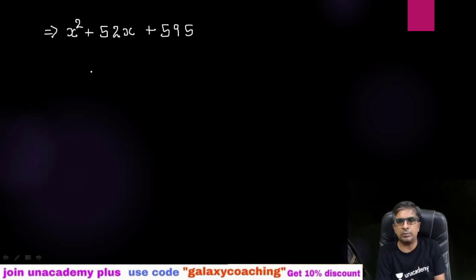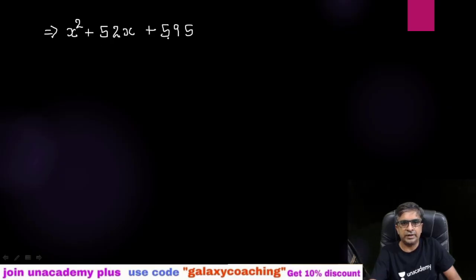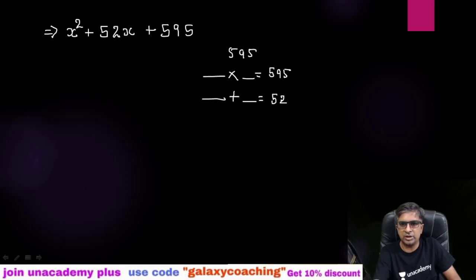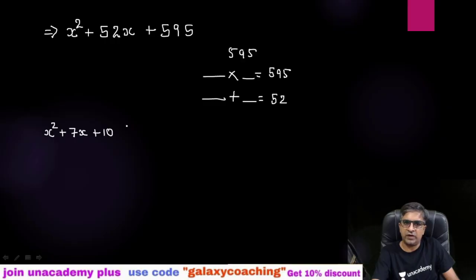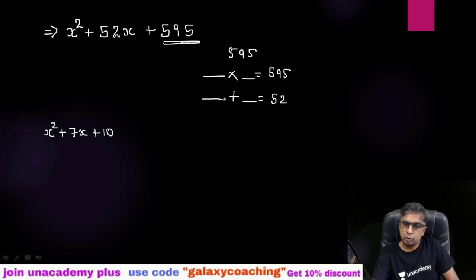In normal splitting the middle term, you know that first we need to multiply the first term and the last term, and then we need to find out the factors of 595 in such a way that the multiplication remains 595 but the addition becomes the middle number. If numbers were very small — for example, x² + 7x + 10 — we find factors of 10 such that multiplication becomes 10 but addition becomes 7: so 5 and 2 (5×2=10, 5+2=7). But here the numbers are very big, so directly we cannot find the factors.